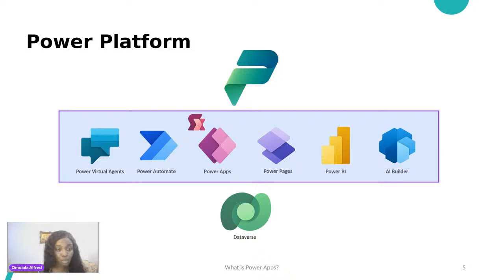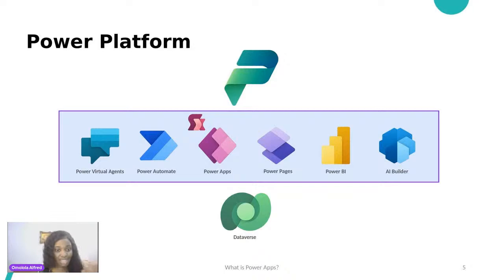Power Automate can also help in an organizational context. Right from where you're seated at your desk, you don't need to carry paper around saying 'help me sign this.' Power Automate would automatically notify people and send your data to whoever you want. Now, Power Apps is used for developing applications. Anytime you're developing applications in the Power Platform ecosystem, you are using Power Apps.